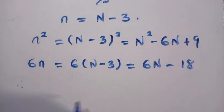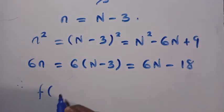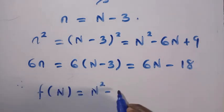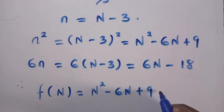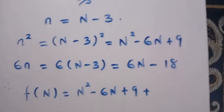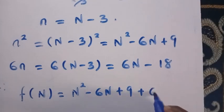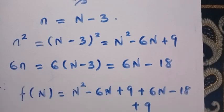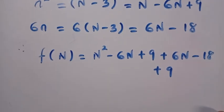Then we are now going to substitute everything back. As we have f(N), instead of n+3, we change it to capital letter N equals n² is given as N² - 6N + 9, then we have plus the 6n is given as 6N - 18, then plus 9.